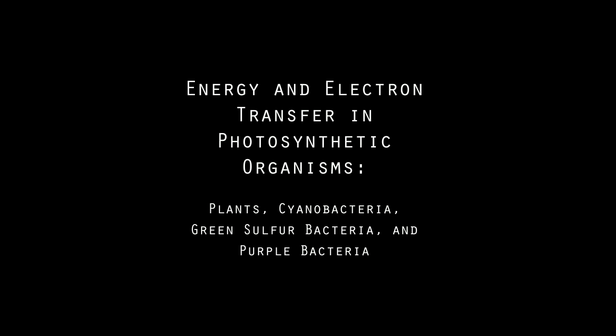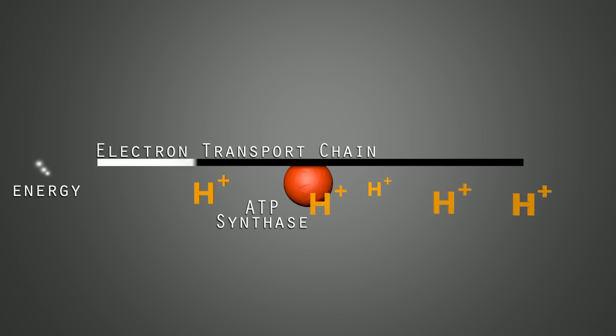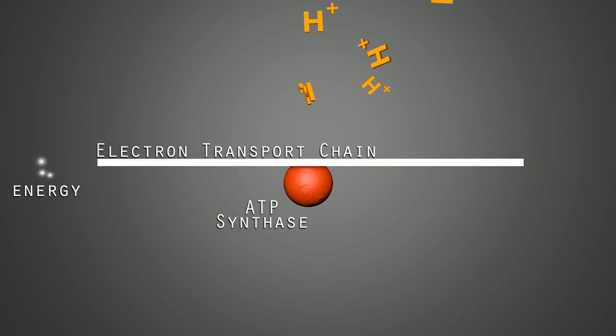All organisms convert energy from the environment into ATP, the currency of energy to do work. Energy from an environmental source drives electrons through electron transport chains, pumping ions across a membrane to form a concentration gradient and power ATP production by ATP synthase.